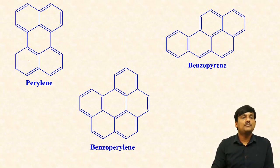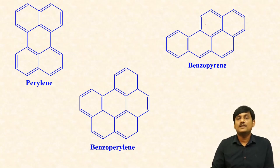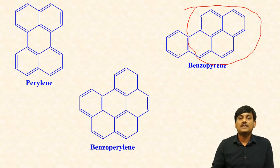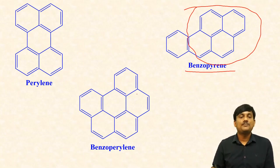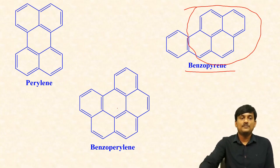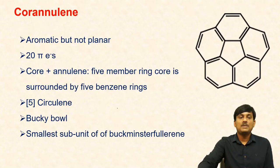And benzopyrene — this is the pyrene, and this one is attached with one benzene ring, so it is named as benzopyrene. Here, six benzene rings are fused. So these are some examples of benzenoid polycyclic benzenoid compounds.